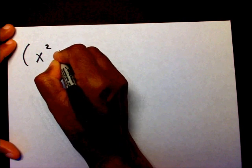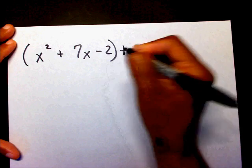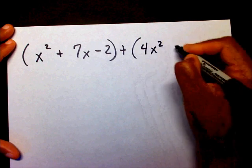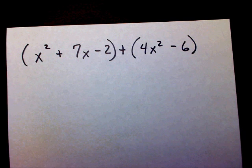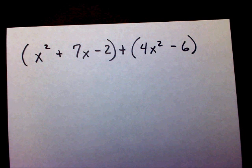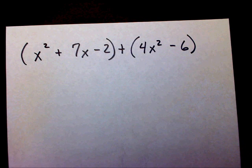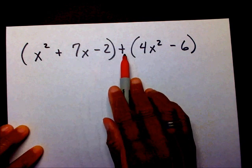Let's say you had x squared plus 7x minus 2, plus 4x squared minus 6. If you've not watched the video on combining like terms, I would recommend watching that video first, because with polynomials, all we're doing is combining like terms when we add and subtract. So you have this polynomial and you want to add this polynomial.